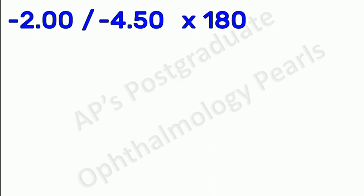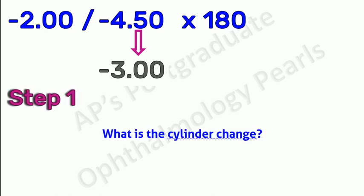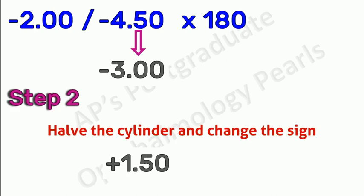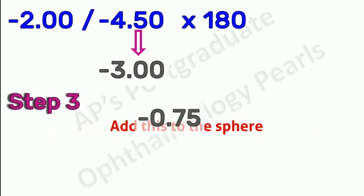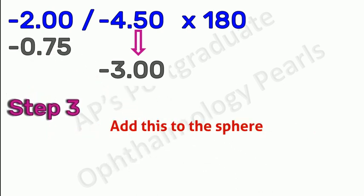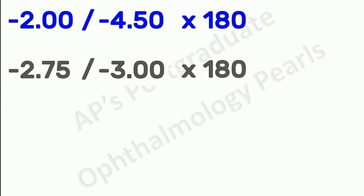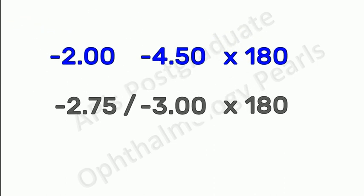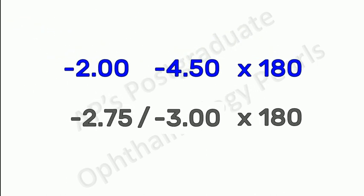Let us see another example. Here, let us say we want only a minus 3 cylinder. Step 1: what is the cylinder change? It is plus 1.5, that is we get minus 3 if we add plus 1.5 to minus 4.5. Step 2: halving and changing the sign, we get minus 0.75. Adding this minus 0.75 to the original sphere, we get minus 2 minus 0.75, that is minus 2.75.